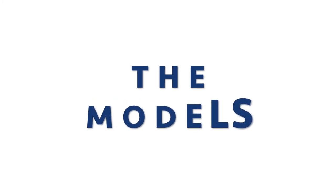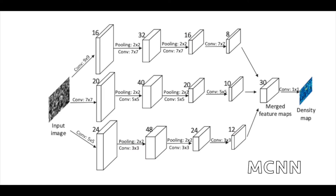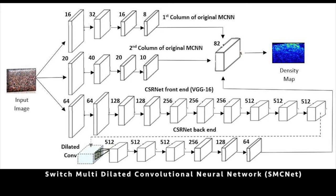There are many popular CNN models created by researchers, and we referenced two of these: the multi-column CNN (MCNN) and CSRNet. We got the idea of creating a new model, SMCNet, by ensembling MCNN and CSRNet. This new model has three columns — the top two columns are adapted from MCNN, and the bottom column is from CSRNet. MCNN's different-sized filters allow detection of heads of different sizes, while CSRNet's small-sized filters enhance efficiency, so SMCNet encompasses the strengths of both models.